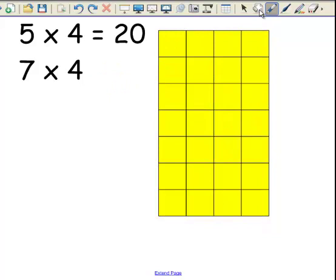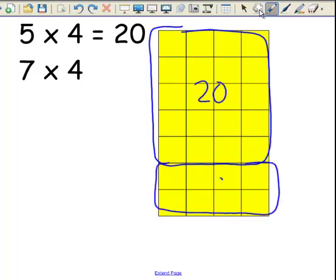Of course, the strategy that I've been sort of looking for here is that they can see the 5x4 is 20, and then they have a 2x4 is 8, and that will give them the answer, 28.